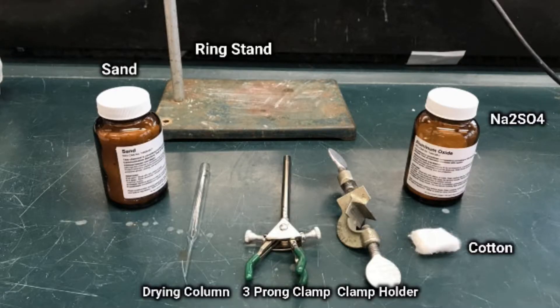In part 2, we will demonstrate how to set up a drying column. You will need sand, a pipette, sodium sulfate, cotton, and a ring stand.